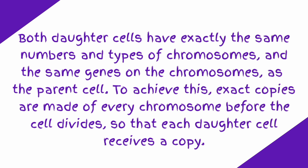Both daughter cells have exactly the same numbers and types of chromosomes and the same genes on the chromosomes as the parent cell. To achieve this, exact copies are made of every chromosome before the cell divides, so that each daughter cell receives a copy.